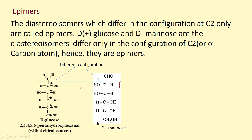This is the glucose molecule and this is the mannose molecule. Both of them have the same molecular formula, and in both molecules one terminal position has an aldehyde group, the other terminal position has a primary alcohol group, and there are four asymmetric carbon atoms. These two molecules differ only at the configuration of the second asymmetric carbon atom, and they are epimers. The diastereoisomers which differ in the configuration of only the C2 carbon atom are known as epimers. C2 is the alpha carbon atom, so glucose and mannose are epimers.